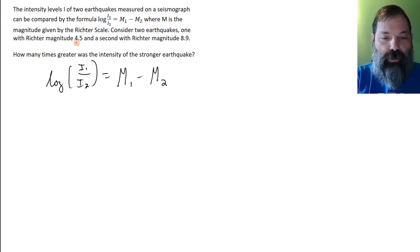All right, so we've got a magnitude of 4.5 and a magnitude of 8.9. Let's take the stronger magnitude to be m1. So I'm going to let m1 be 8.9 and m2 be 4.5.